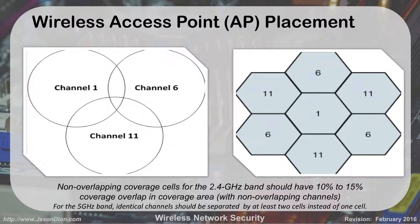For non-overlapping coverage cells in the 2.4 GHz spectrum, we always aim for 10 to 15% overlap. That way, as we're getting further from the access point and the signal starts dropping, we're picking up the next access point before we drop completely. That's why we have that little overlap gap between the two, and we want to make sure we are not touching the same channel numbers.